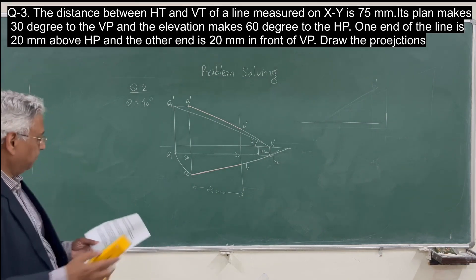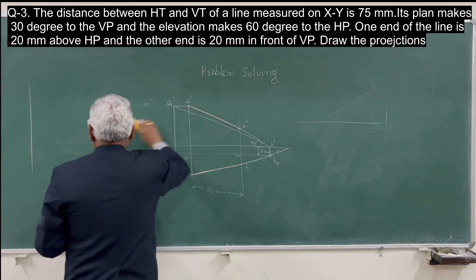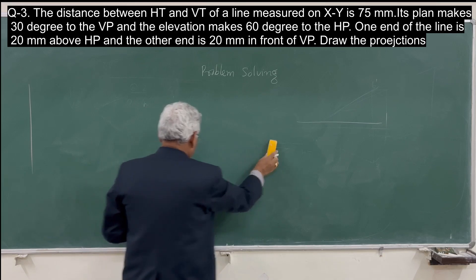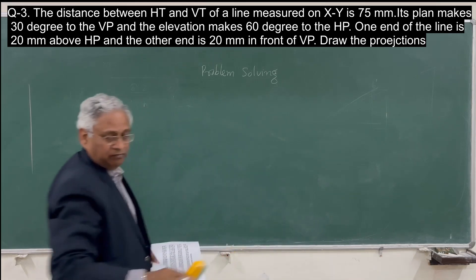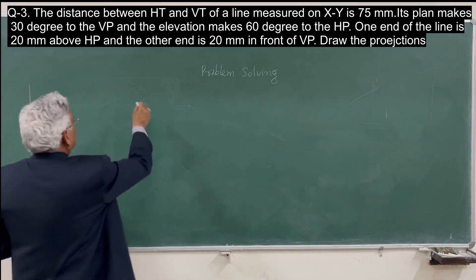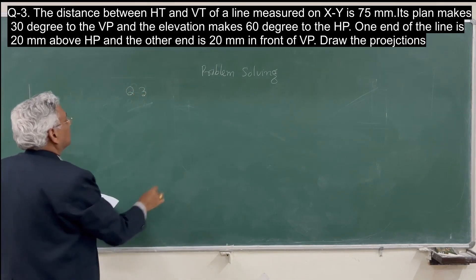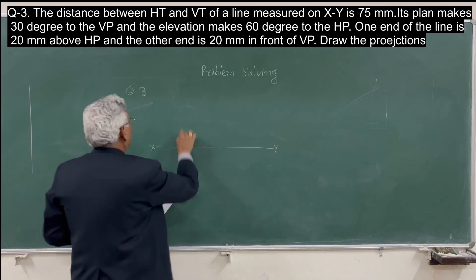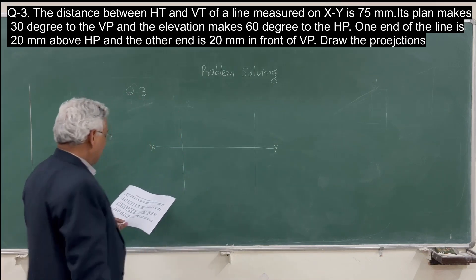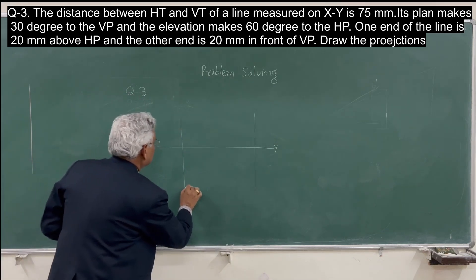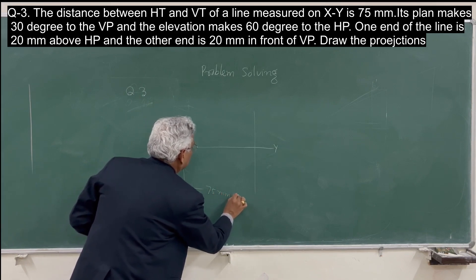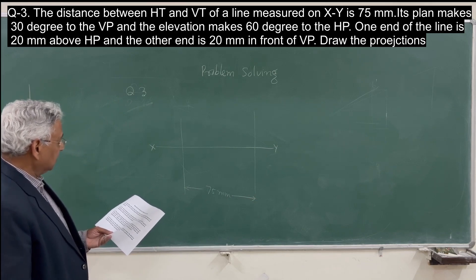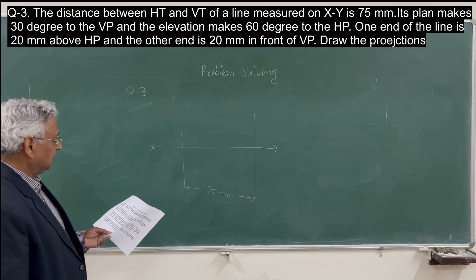Question number 3 is: the distance between the horizontal trace and vertical trace of a line, measured parallel to XY, is 75 mm. The plan makes 30 degrees to the vertical plane, and the elevation makes 60 degrees to the horizontal plane.